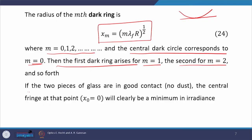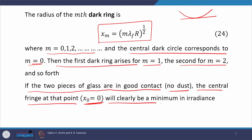While performing the experiment, sometimes we do not see the dark pattern — people see bright there. This is because of insertion of small dust particles. The two surfaces do not touch properly because a few dust particles sit there. But if the two pieces of glass are in good contact with no dust, the central fringe at x₀ = 0 will clearly be a minimum in irradiance — perfect dark.